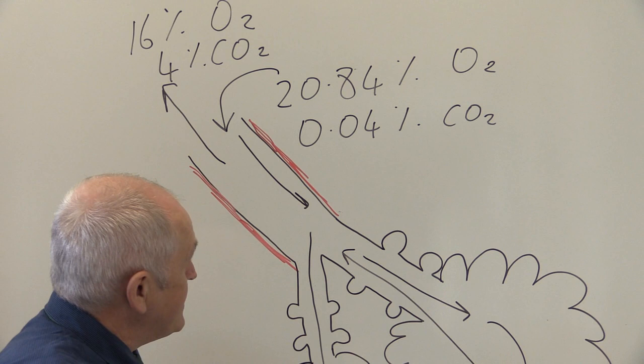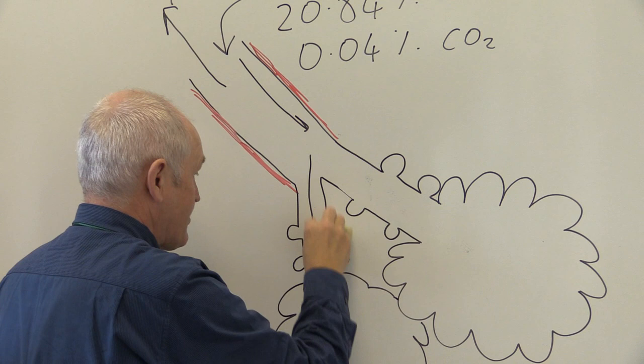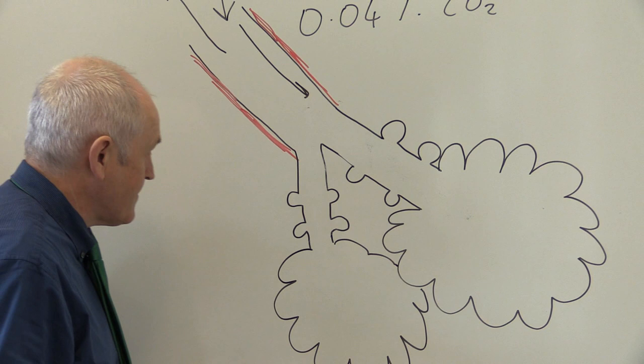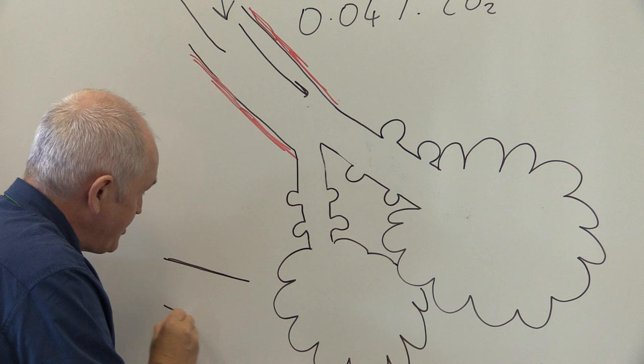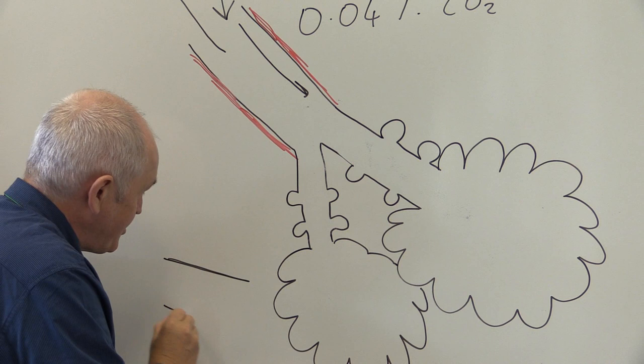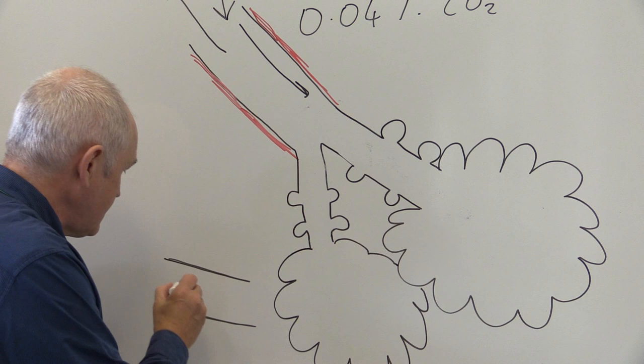Approaching an alveolus or air sac, what we have is a branch of the pulmonary artery, which is carrying relatively deoxygenated blood. Typically the oxygen saturations in this blood are going to be about 75%.